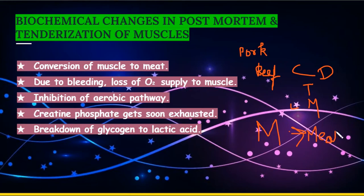Let's discuss the post-mortem changes — the biochemical changes which take place after the slaughter of animals. Slaughter of food animals is followed by a series of physical and chemical changes over a period of hours or days, resulting in conversion of muscle to meat. This happens firstly due to exsanguination, which is also called bleeding. Due to bleeding, there is loss of oxygen supplied to the muscle, and the oxygen stored in myoglobin gets depleted.